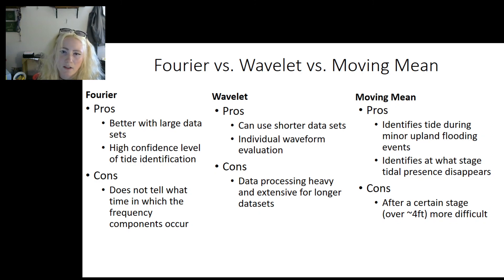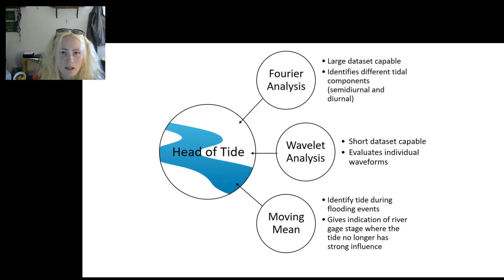The Moving Mean identifies tide during minor upland flooding events and can identify at what stage tidal presence disappears. However, after a certain stage of about 4 feet, it is more difficult to use the Moving Mean analysis. Each analysis brings some aspect to identifying the head of tide that another may not supply. This is a summary visual of the capabilities of each.